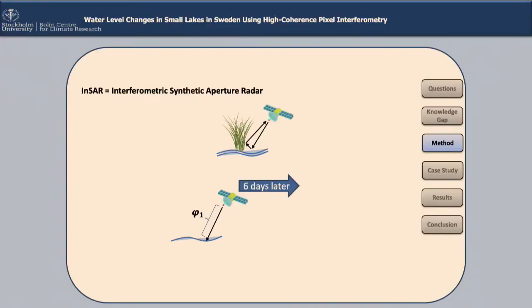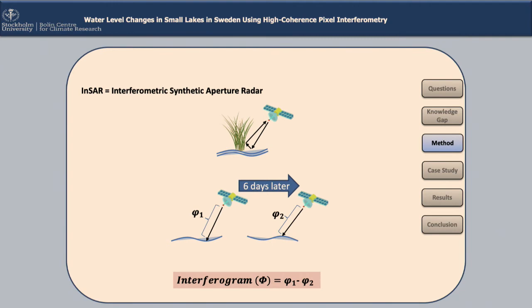What we do is measure the distance between the satellite and the surface of the water. Six days later, the satellite comes back to the same location and measures that distance again. We can estimate the difference between these two measurements. The output product is called an interferogram, which represents the difference in water level between two points in time.